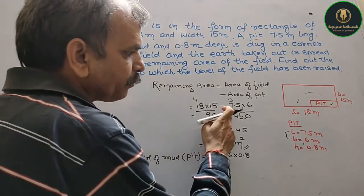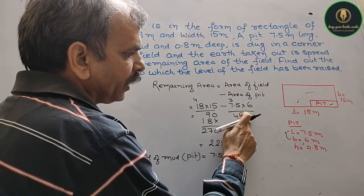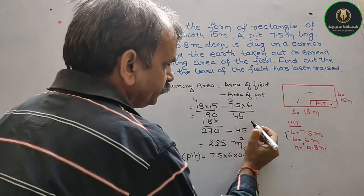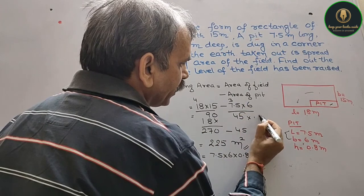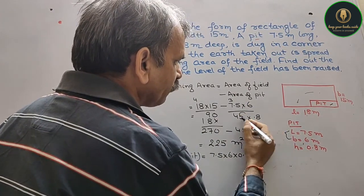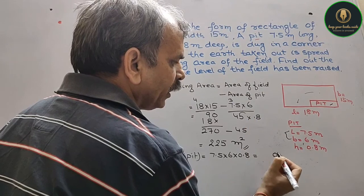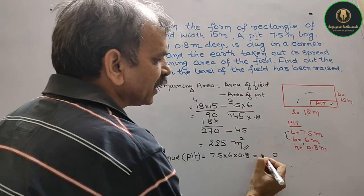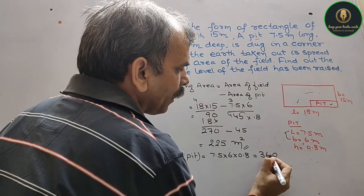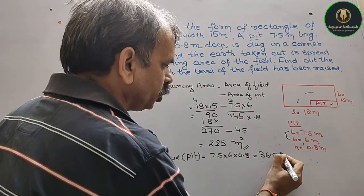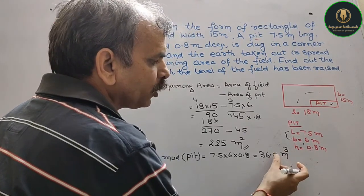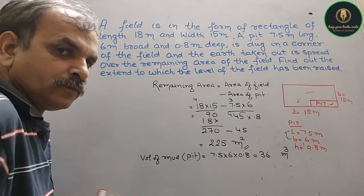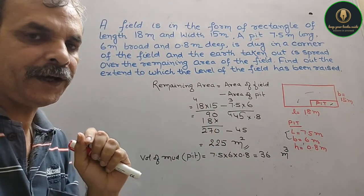So 7.5 into 6 is 45, and 45 into 0.8 gives 36.0 meter cube — or you can say 36 meter cube. That is the volume of the mud jo aapne pit mein se nikala.